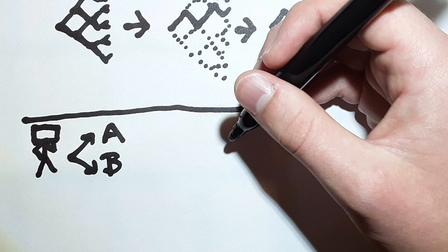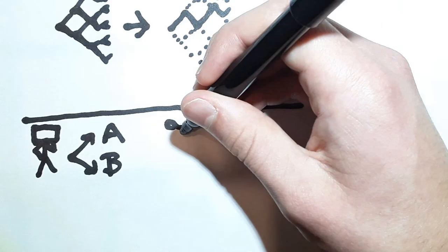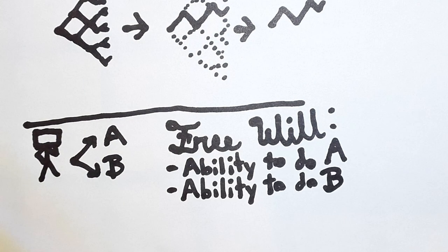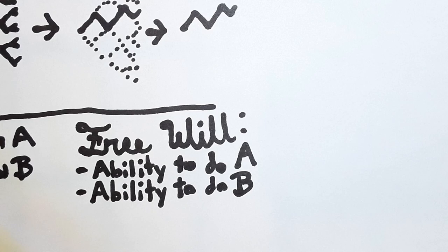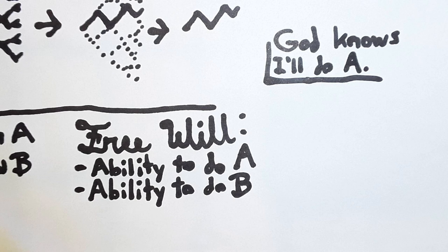To have the ability to make a free decision between the options A and B, I need to have the ability to do A and the ability to do B. But if God knows the future, he knows that I'm going to choose to do A, for example,